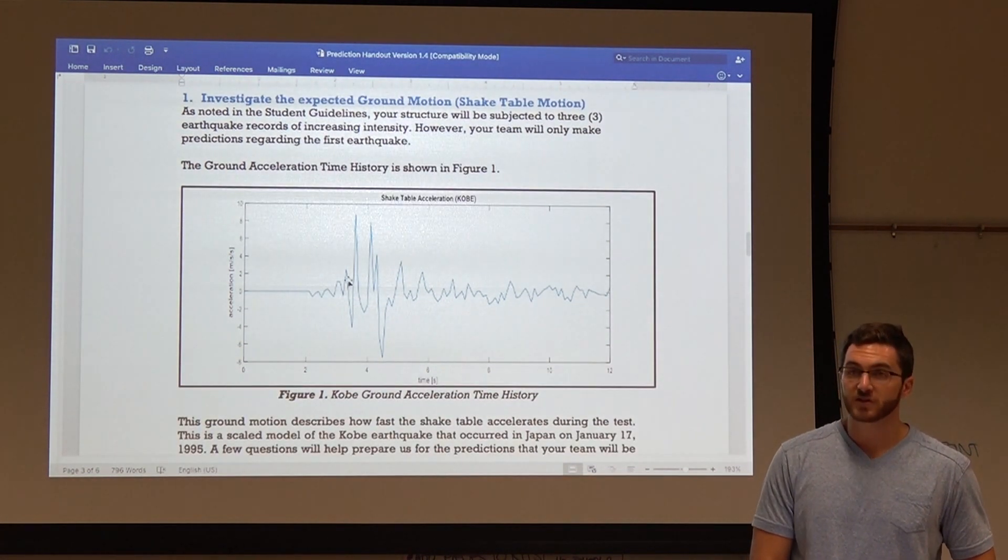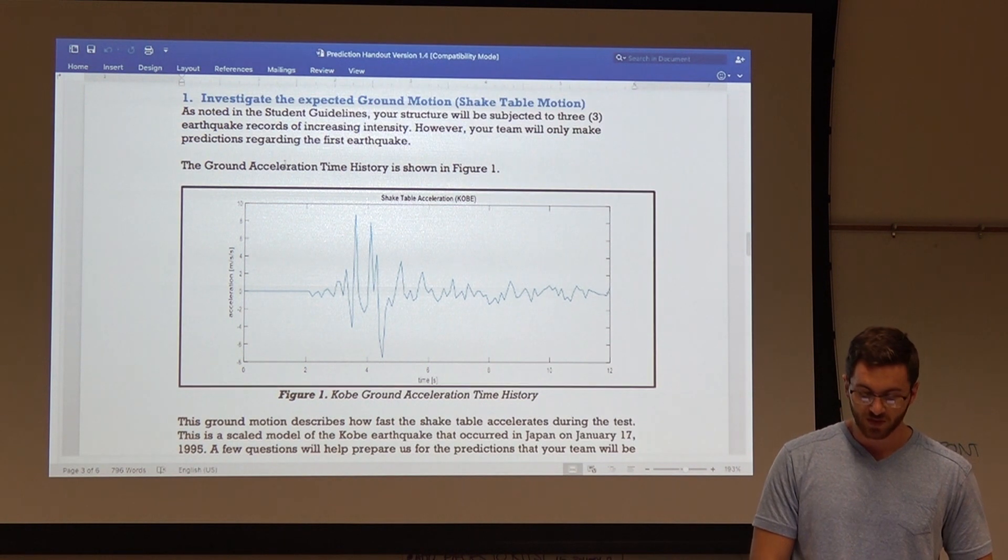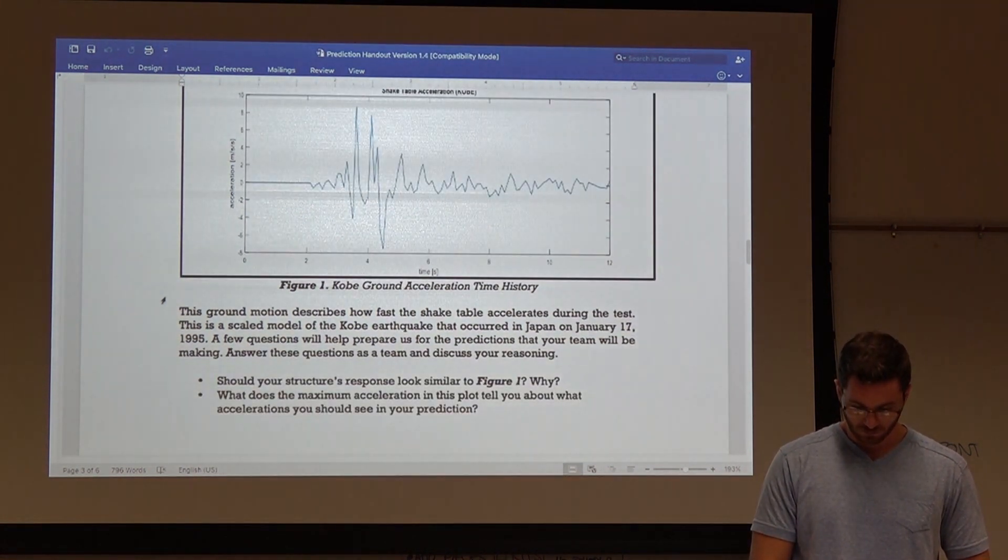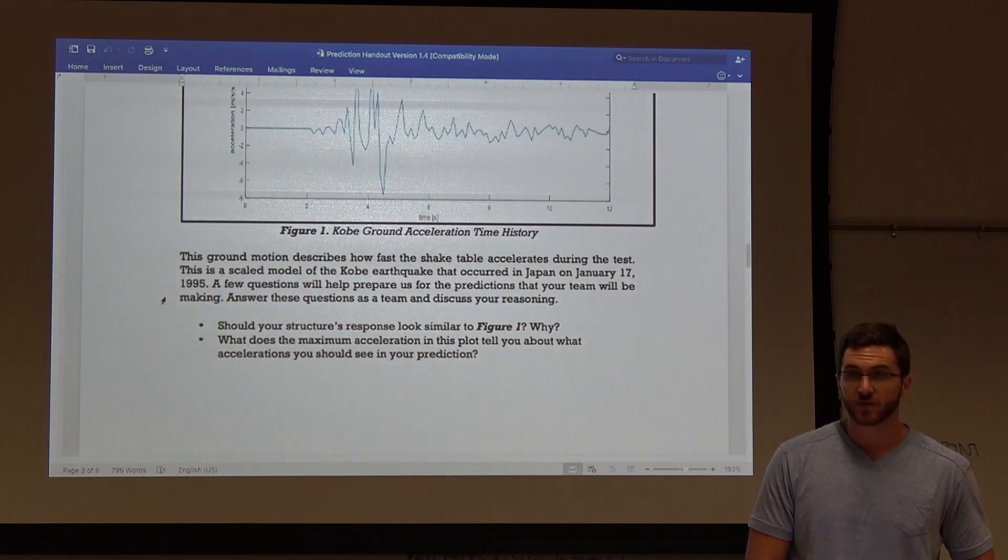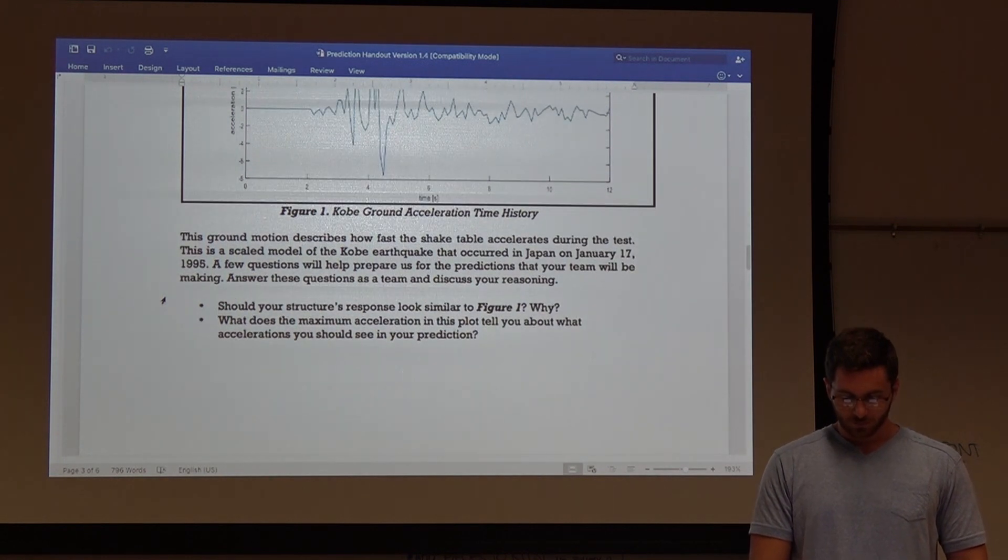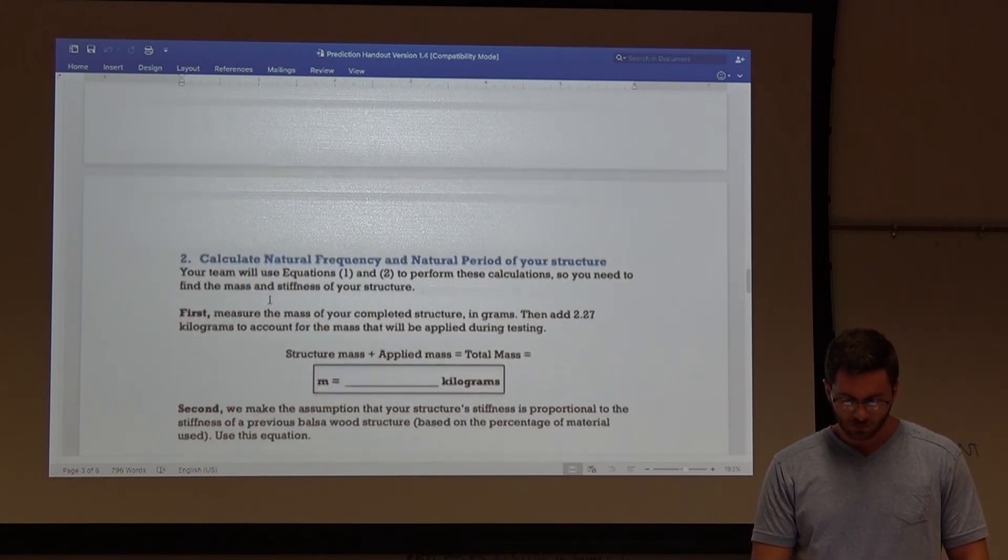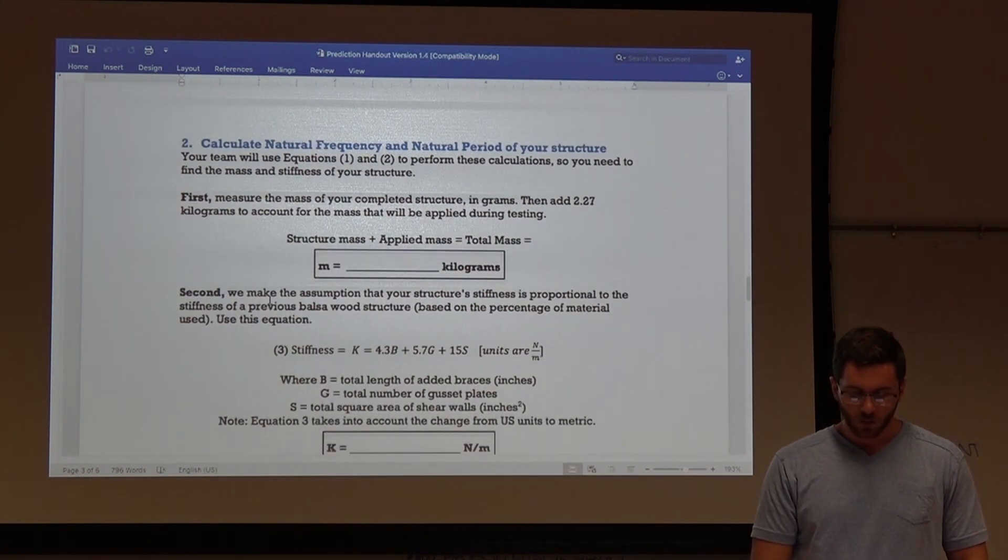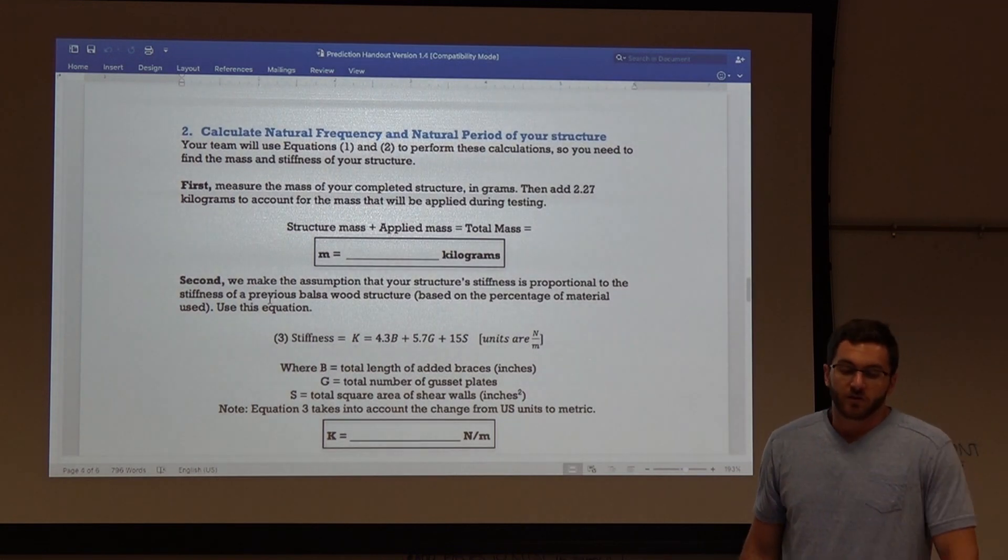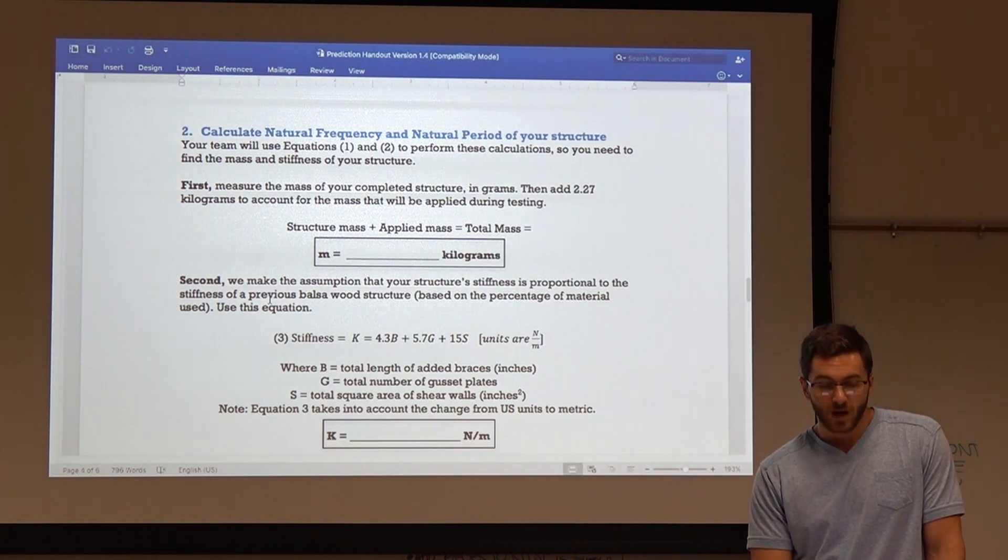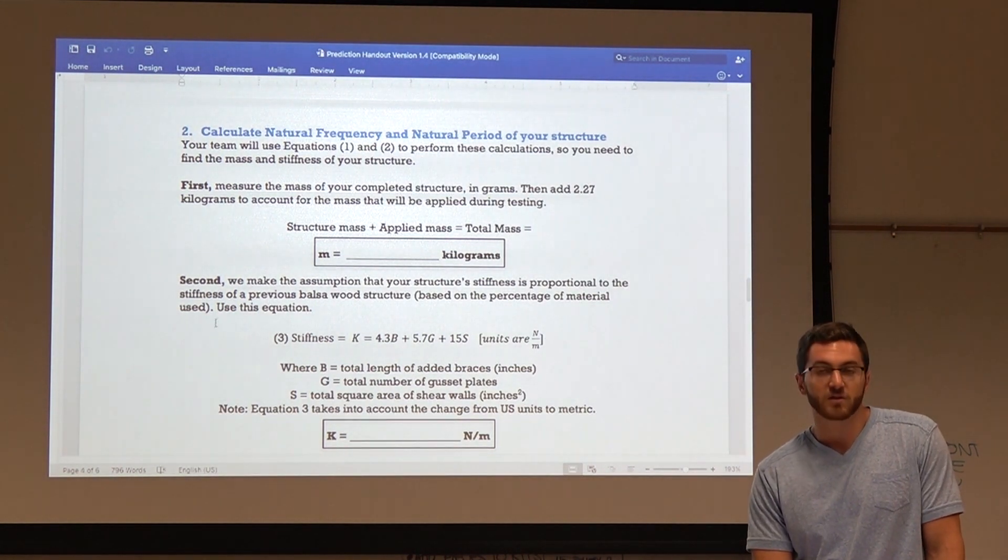So this is the ground motion that your structure will experience. And we can use it to investigate the expected ground motion. This stuff is pretty self-explanatory and you can let the students read it. And there's questions to go over just to kind of start a conversation. We don't have to go over that. We'll spend time here. So, to calculate the natural frequency and natural period of the structure, we need to know two properties. We need to know mass and we need to know stiffness.